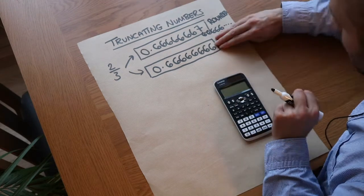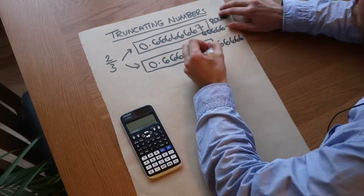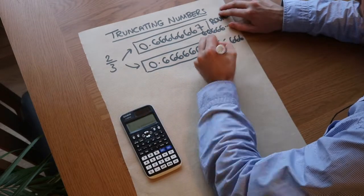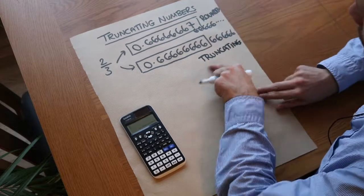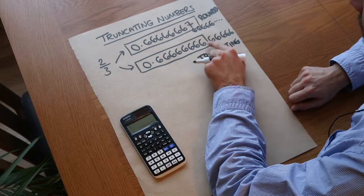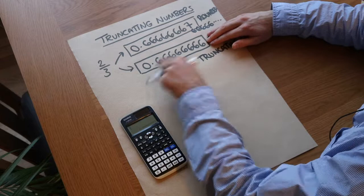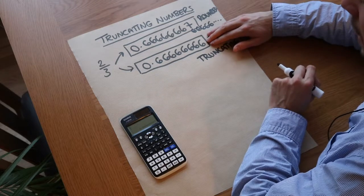When we do this cutting off of the digits without rounding up, we call that truncating. You can think of truncating as just rounding down. We don't check the digit after to see if the digit goes up by one; we just discard all the digits after and keep the number we have left.